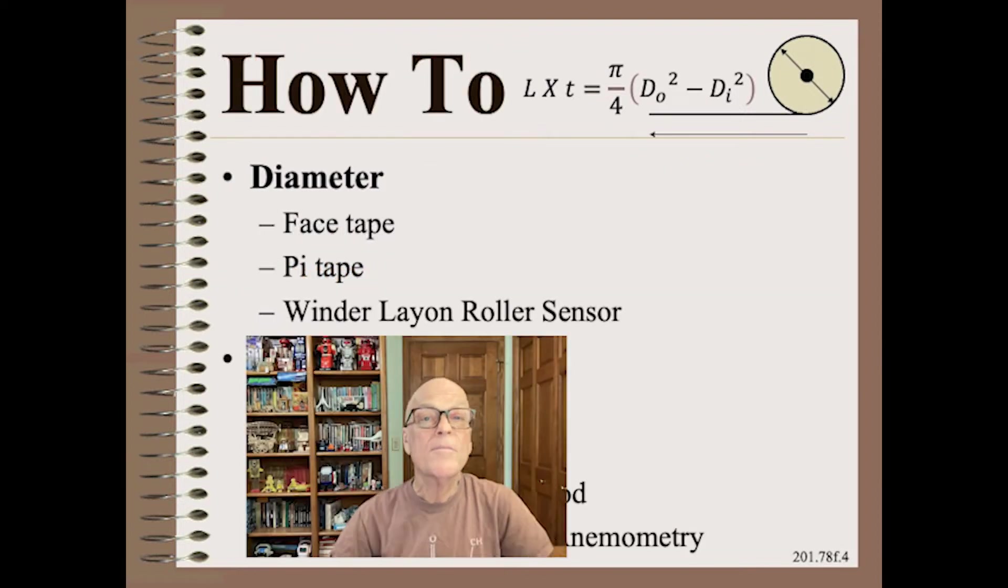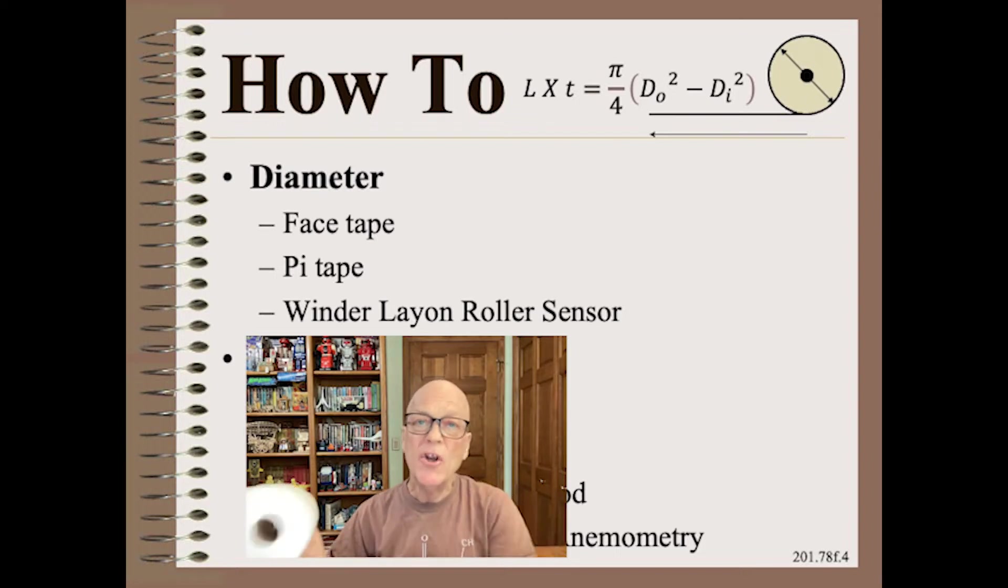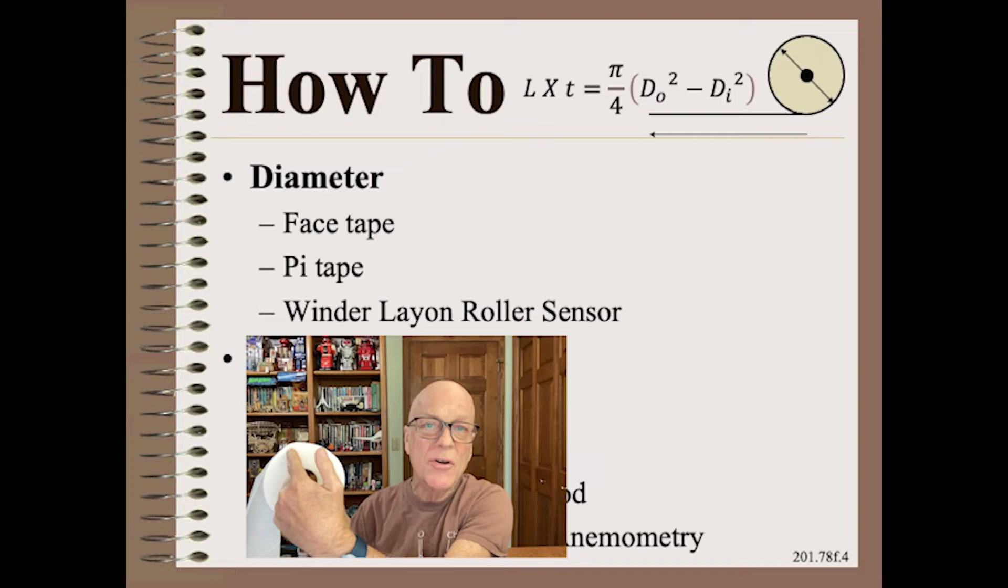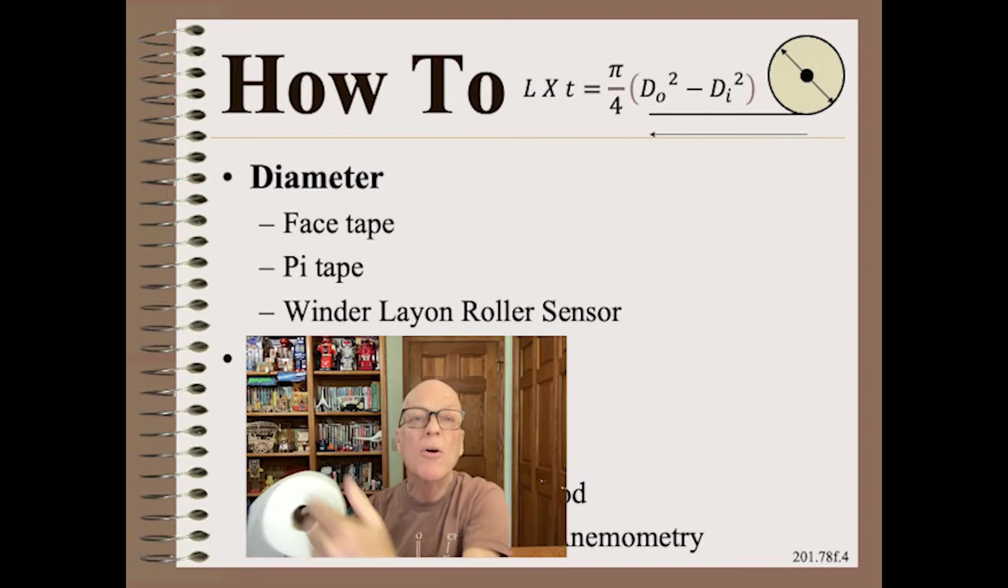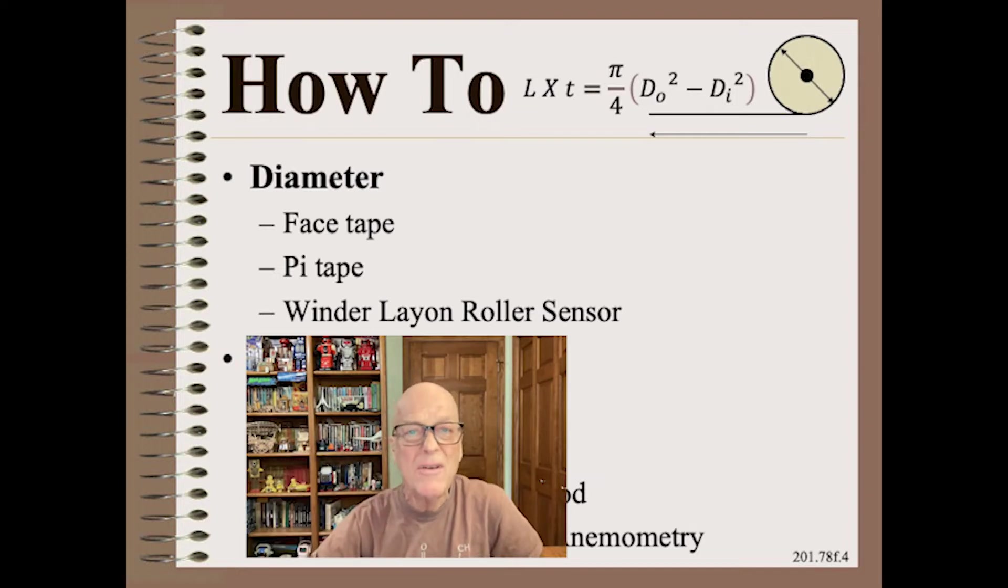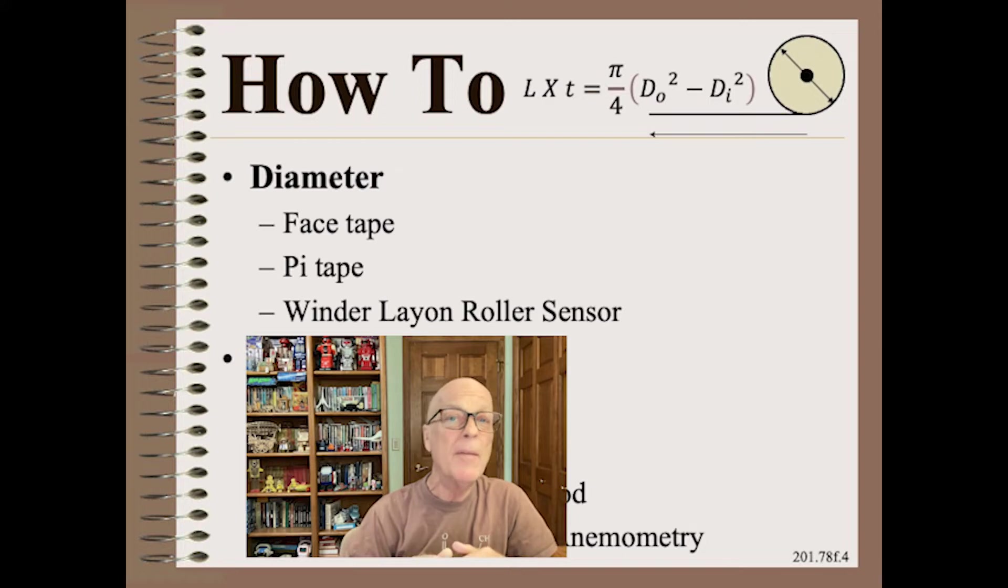Because we know how to measure diameter. In order of increasing accuracy, you could put a tape measure across the face of the wound roll. Better yet, you could use a pi tape around the circumference of the wound roll, though setting up for that measurement could take more time. Even better yet, you can use any winder that is equipped with a lay-on roller and a lay-on roller position sensor.